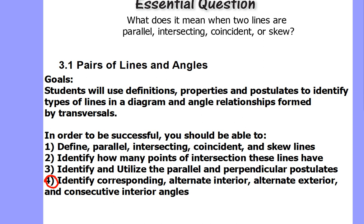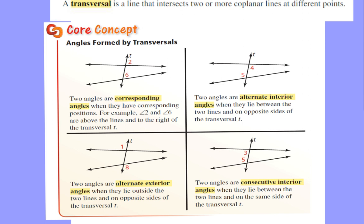Let's first recap what a transversal is. A transversal is simply a line that intersects two or more coplanar lines — lines lying in the same plane — at different points. Basically, it's a line that cuts two or more other lines. We will spend a lot of time in this course talking about what happens specifically when the two lines are parallel.